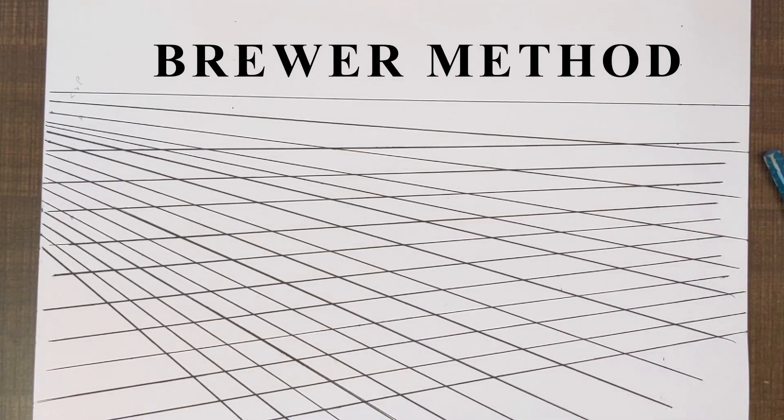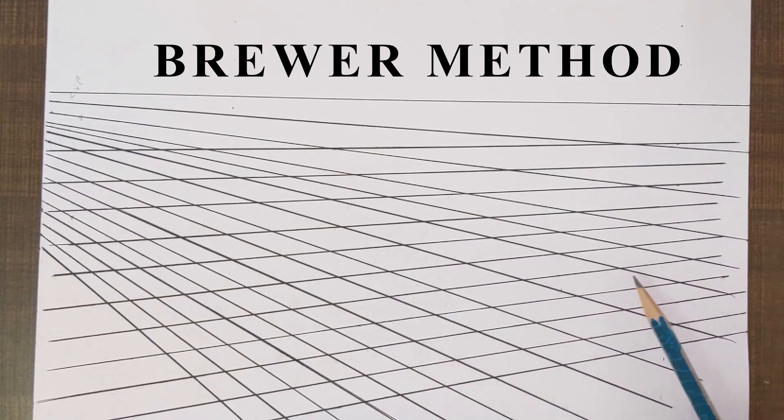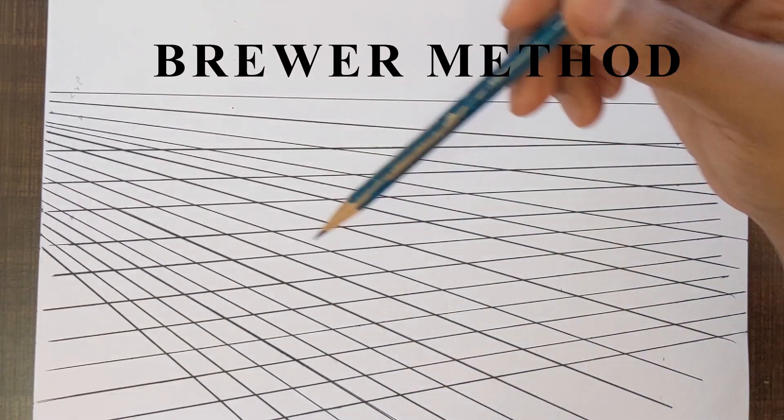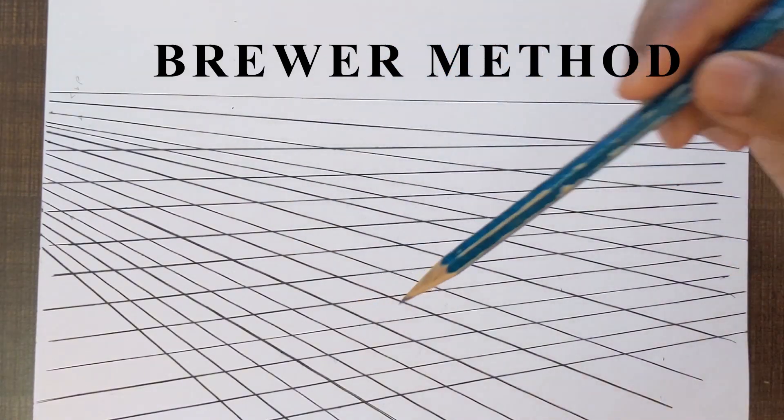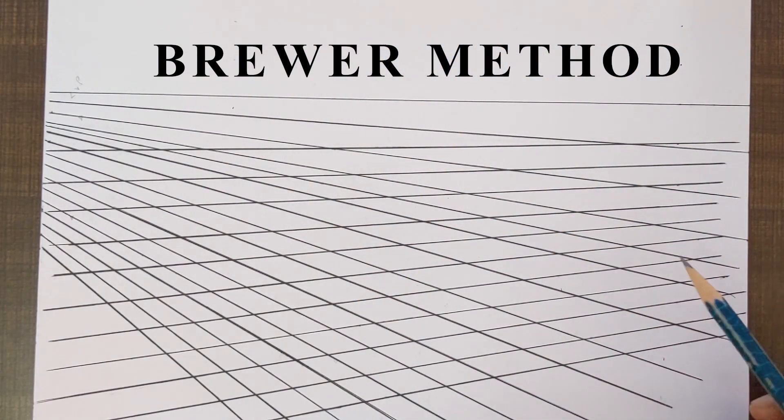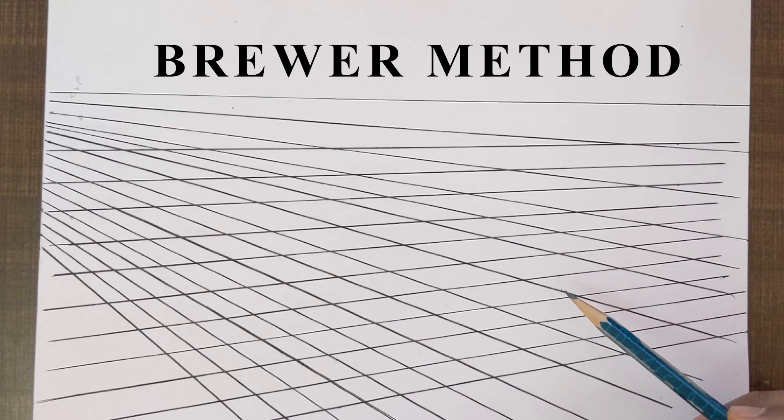Hello everyone, welcome back to the channel. In this video we are going to learn how to construct a two-point perspective grid where the vanishing points are off the page. This method is called the Brewer method.